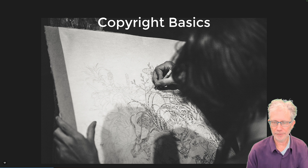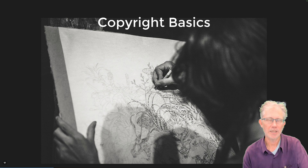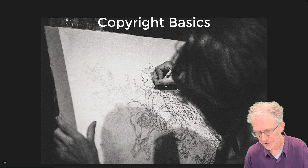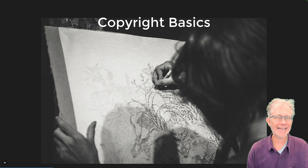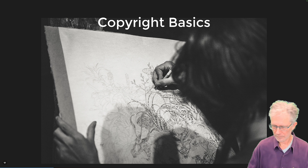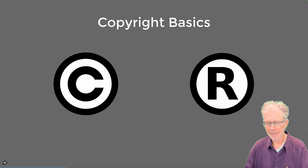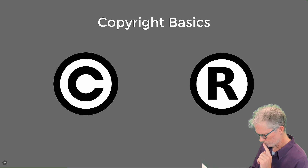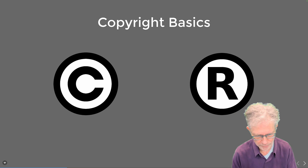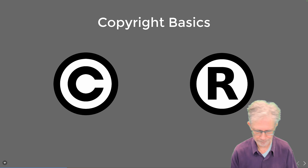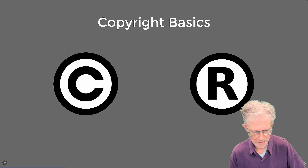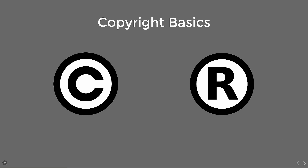You may hear people talk about registering with the U.S. Copyright Office. That's not required, but it does have some additional benefits, particularly if the creator ever wants to sue someone for violating their copyright. Copyright protects original works of authorship — literature, music, art — that are fixed in a tangible medium like books and recordings. It grants the creator exclusive rights to reproduce, distribute, perform, display, and create derivative works. Copyright protection is automatic upon creation and generally lasts for the life of the author plus 70 years.